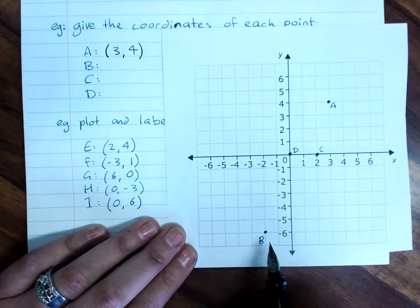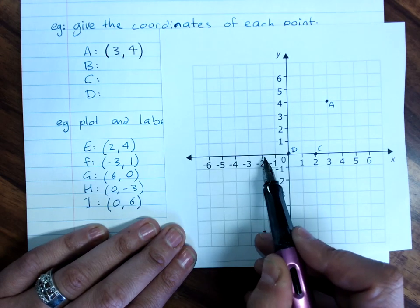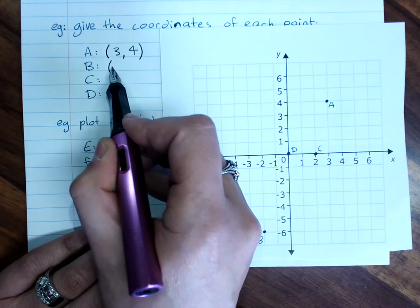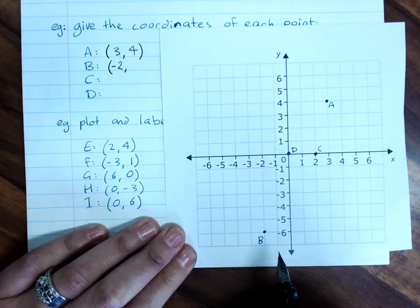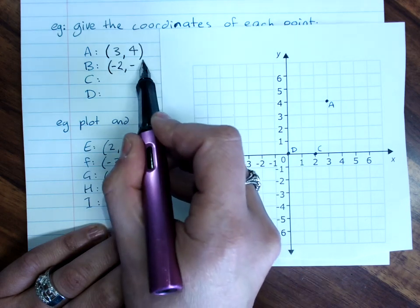Point B, read up to the x-axis, we're at negative two. Bracket, negative two. Read across to the y-axis, it's at negative six.